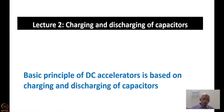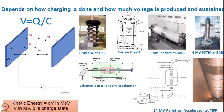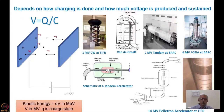One of the things which we have to know is how the capacitors are formed in DC accelerators. And the basic equation which governs these DC accelerators is: voltage generated on the capacitor V is given by the charge transferred to the capacitor divided by the capacitance value of that capacitor. So V is equal to Q upon C.